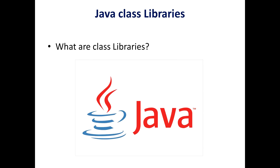The Java class libraries: the sample programs shown in previous videos use println and print, which are available through System.out. System is a class predefined by Java that is automatically included in your programs. The Java environment relies on several built-in class libraries containing methods that provide support for input/output, string handling, networking, and graphics. Java as a totality is a combination of the Java language itself plus its standard classes, and learning to use those standard classes is part of becoming a Java programmer.